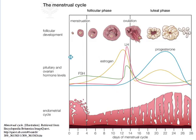In this simple outline of the menstrual cycle, we consider the role of several chemical messengers or hormones: FSH (follicle stimulating hormone), LH (luteinizing hormone), estrogen, and progesterone.